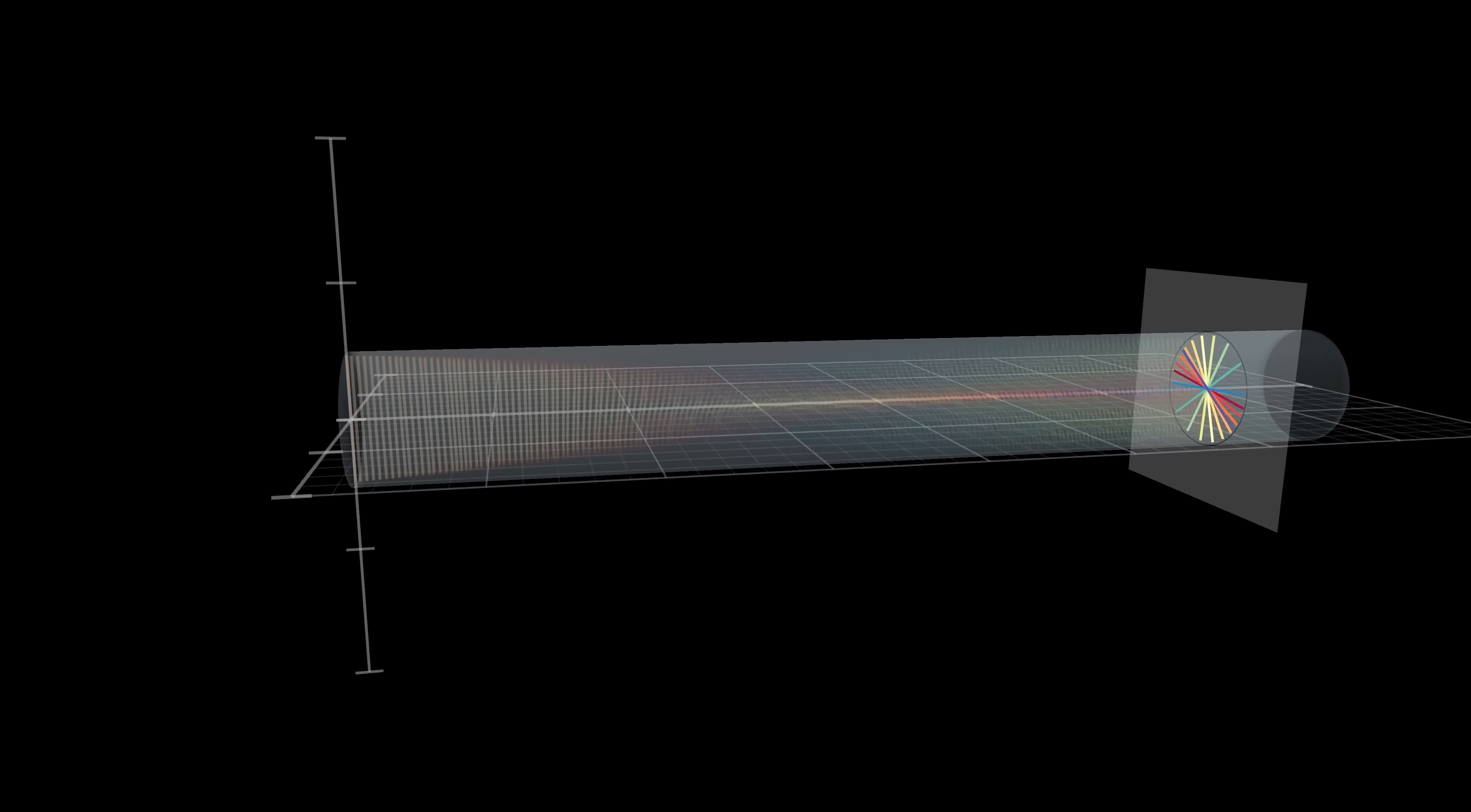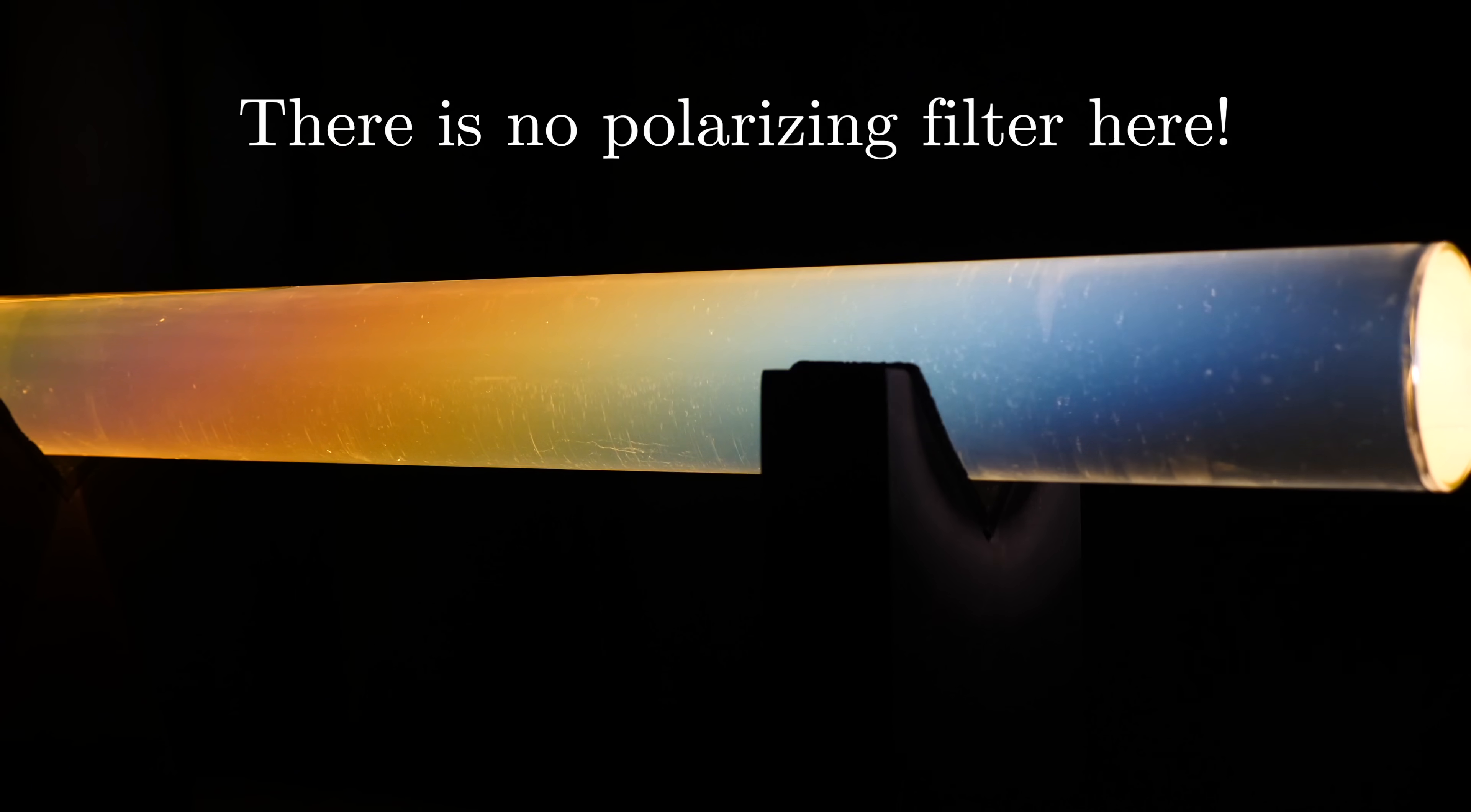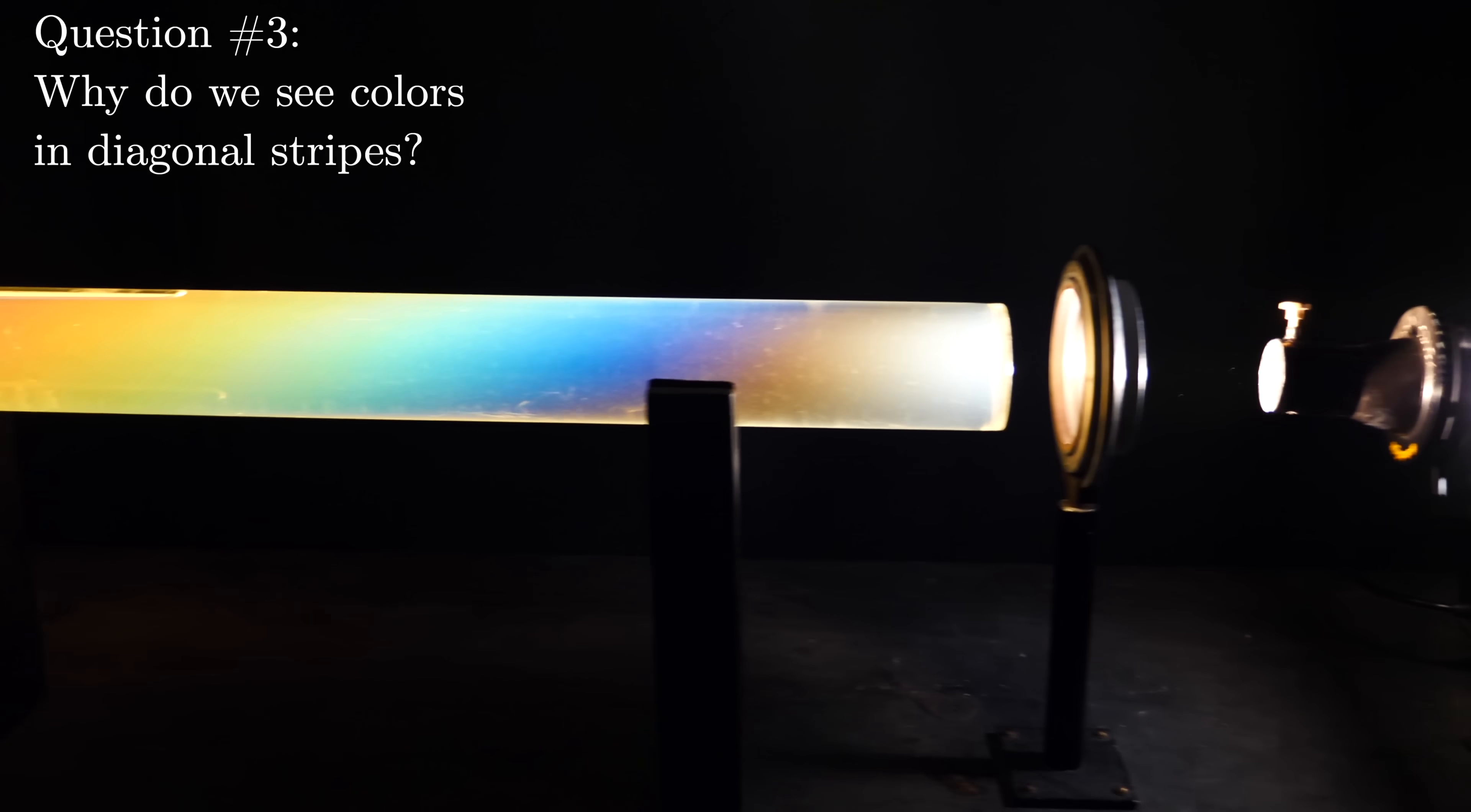So why would viewing it from the side change what you see? The way I've made this animation, I've just left a faint shadow representing the wiggling direction for each color along the way down the tube. But that's just a cartoon, it's a schematic representation. Why is it that the actual way that light interacts with the molecules within the tube would discriminate between the colors in any way? And why would the stripes be diagonal? Wouldn't you think the setup should be completely symmetric from top to bottom?